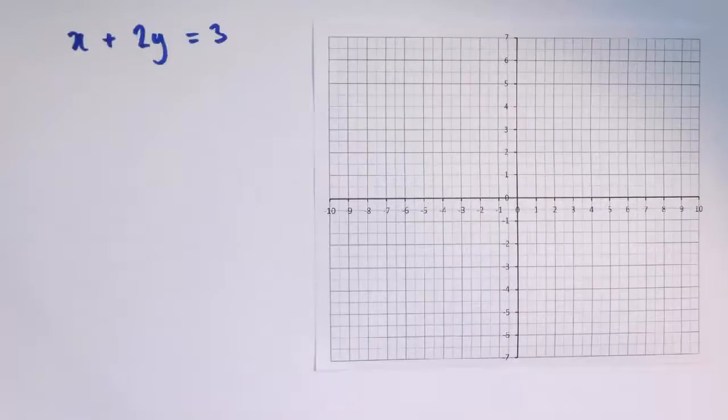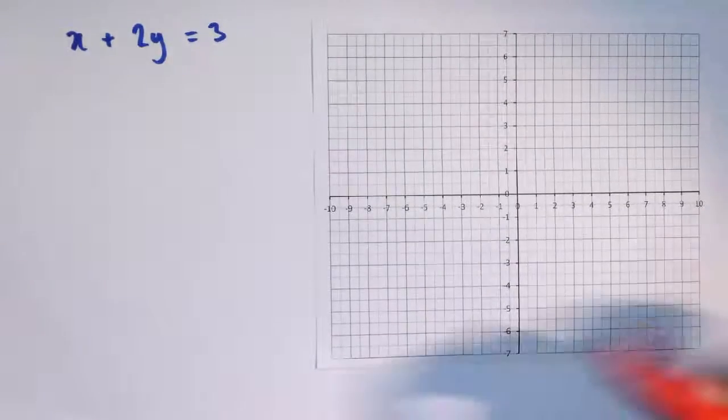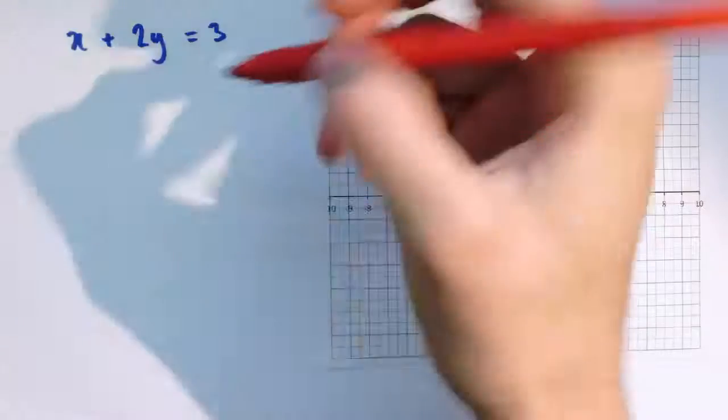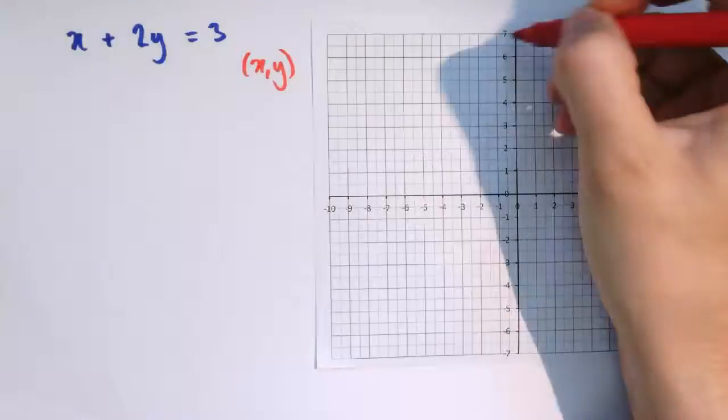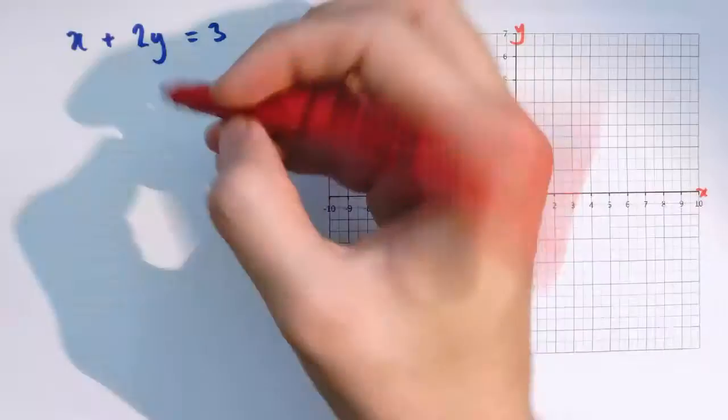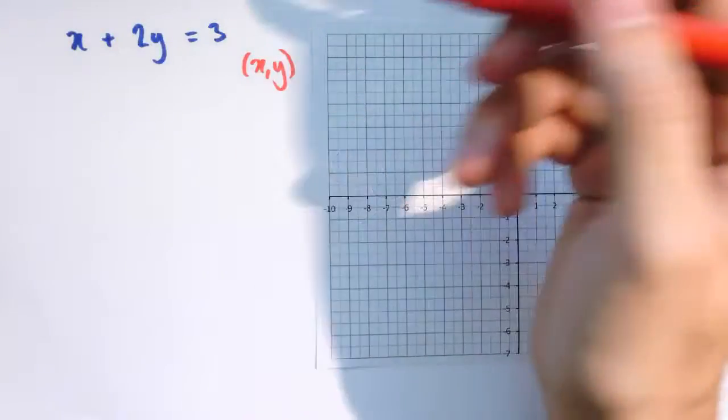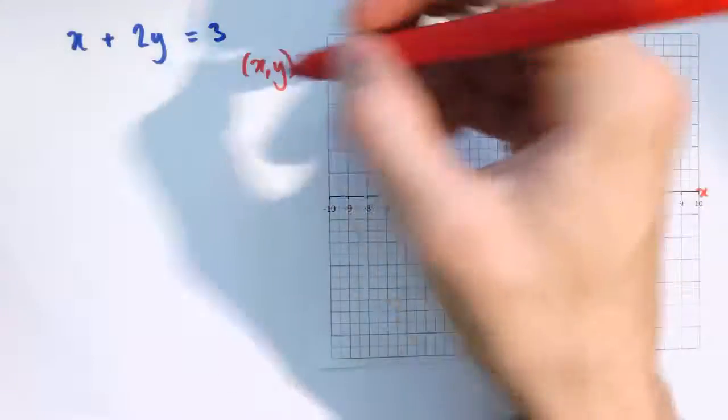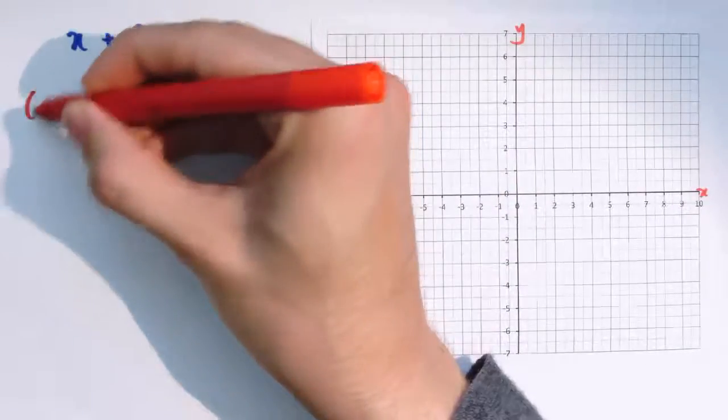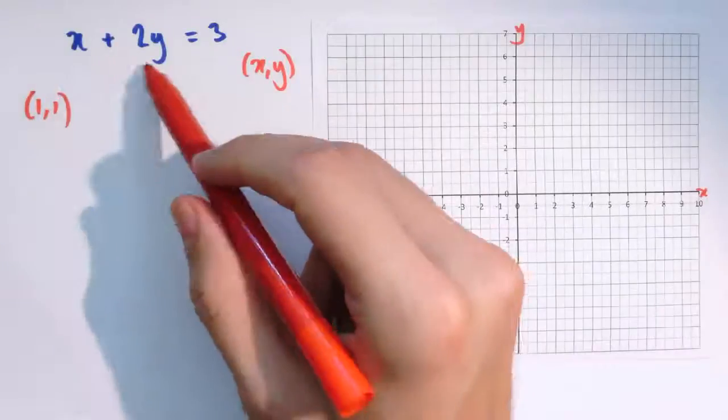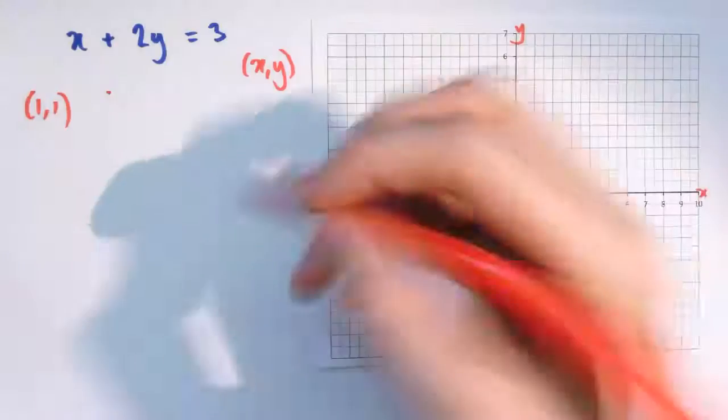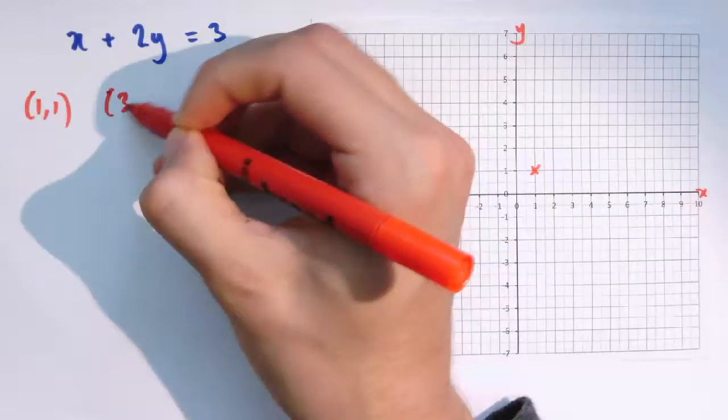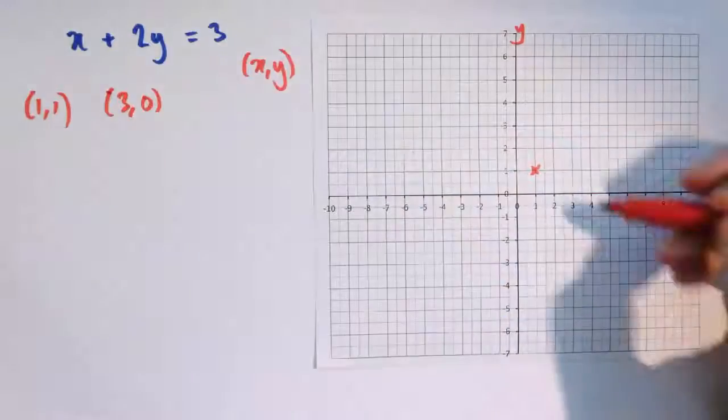Another example then is x plus 2y equals 3. So let's look for values whose coordinates (x, y) satisfy this relationship and then plot them on our axes. We could do (1,1). That works - if I make x 1 and 2 times 1 that gives me 3. So this point here (1,1) is on the locus. If I made x equals 3 I could have y equals 0. And that would work. 3 plus 0 is 3. So there's another point here.